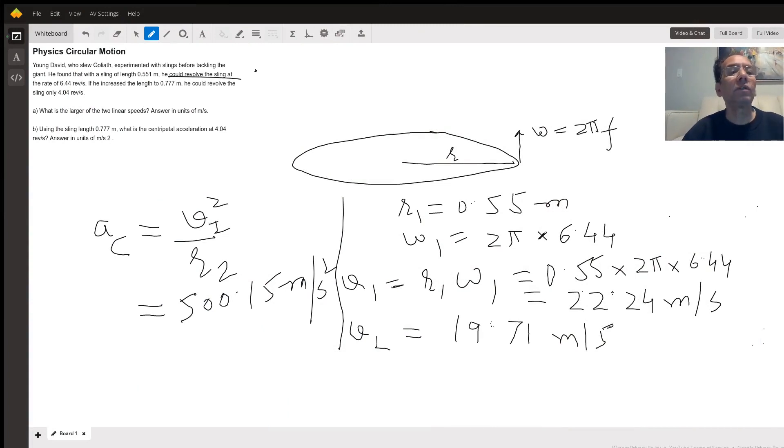Hi, this is a question on rotational motion or circular motion. There is a string of length 0.55 meters and it will revolve at a rate of 6.44 revolutions per second.